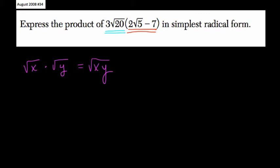And that's going to be useful here, because when we're combining these two terms and multiplying them, I'm going to distribute 3 times the square root of 20 to both terms here. To 2 times the square root of 5, and then times 7.